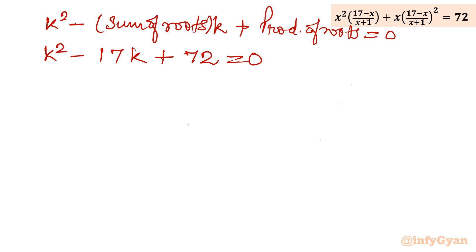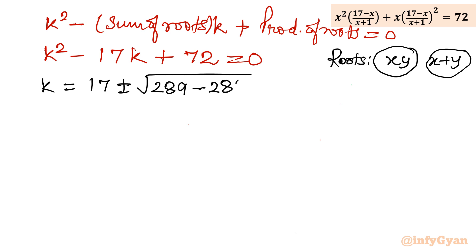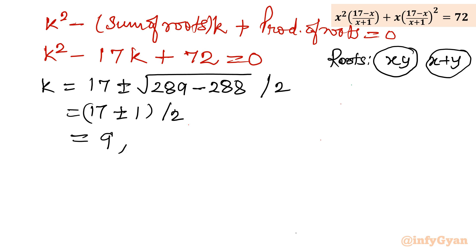Let us solve this quadratic equation for our two roots — remember: xy is root one and x plus y is root two. Applying the quadratic formula: k equals (17 plus or minus √(289 minus 288)) over 2, which gives (17 plus or minus √1) over 2. So k equals (17 plus 1)/2 = 9 and k equals (17 minus 1)/2 = 8.